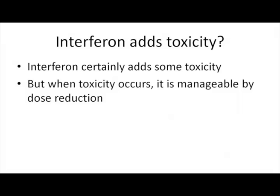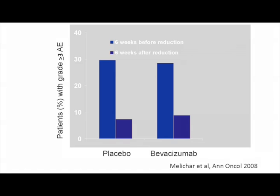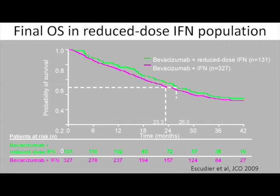One reason why you probably don't use bevacizumab is because interferon adds toxicity. There is no question that interferon adds some toxicity, especially at the beginning of treatment. But looking at the literature, when toxicity occurs it is very manageable with dose reduction. In the AVOREN trial, we did dose-reduce, and what we showed is that with dose reduction we had very rapid improvement of toxicity. In addition, patients who required dose reduction actually had better overall survival than those who did not — so toxicity with interferon is probably a marker of efficacy, and we don't need to be afraid of it.